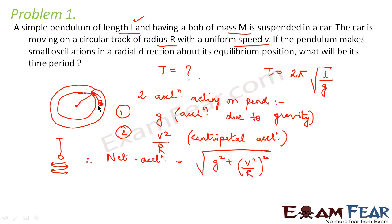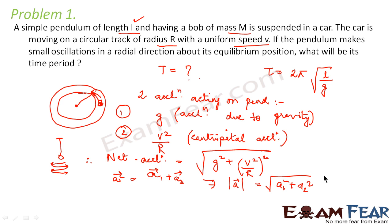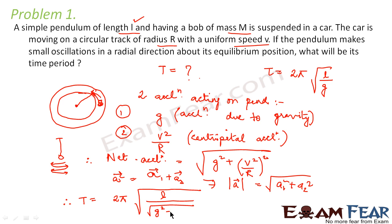This is the standard way to find the resultant of two perpendicular vectors from the beginning of your syllabus. For any vector A = A1 + A2, the magnitude is √(A1² + A2²). Applying the same here, the time period becomes T = 2π√(L / √(G² + V⁴/R²)). So this is your time period for this problem.